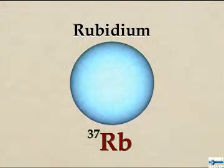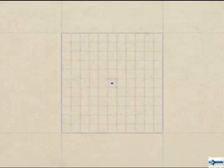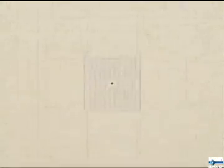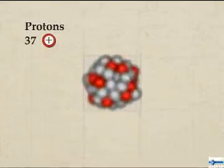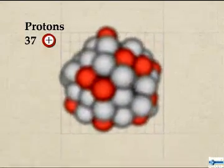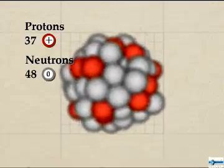Each rubidium atom consists of a cloud of electrons surrounding a compact nucleus that contains almost all the atom's mass. In the most common form of rubidium, its nucleus has 37 positively charged protons plus 48 uncharged neutrons.